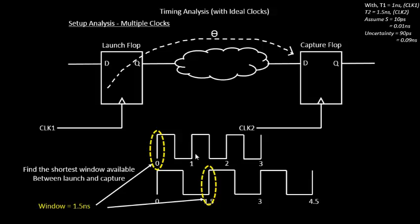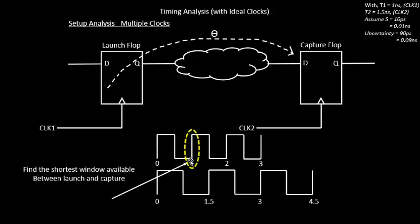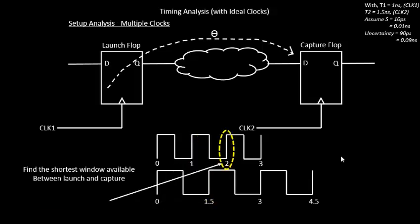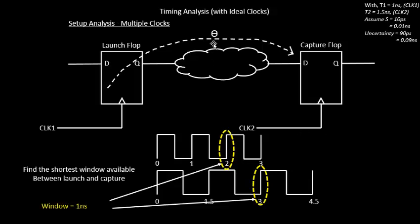The second combination: launch at 1 nanosecond on clock one, and the next rising edge on clock two after 1 nanosecond is at 1.5 nanoseconds. The window available is only 0.5 nanoseconds, so theta must be less than 0.5 nanoseconds. The third combination: launch at 2 nanoseconds, and the next rising edge on clock two is at 3 nanoseconds, giving a window of 1 nanosecond — so theta must be less than 1 nanosecond.